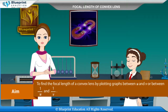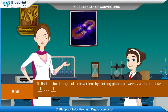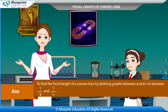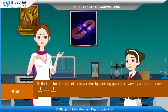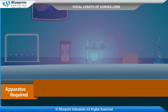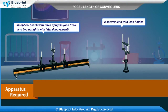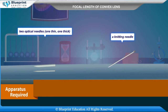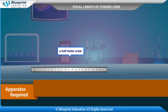Our aim is to find the focal length of a convex lens by plotting graphs between U and V or between 1/U and 1/V. Apparatus required: an optical bench with 3 uprights (1 fixed and 2 with lateral movement), a convex lens with lens holder, 2 optical needles (1 thin, 1 thick), a knitting needle, and a half-meter scale.